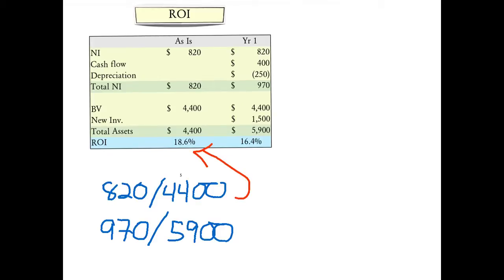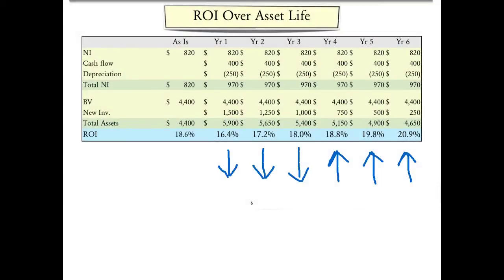On the other hand, if the new project is undertaken, a revised return on investment will lead to a decrease of ROI from 18.6% to 16.4%. If we expand those calculations over the life of the project, we see the pattern where, in the first three periods, the return on investment is less than it currently is. The return on investment increases over the second half of the useful life of the new investment.